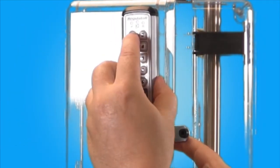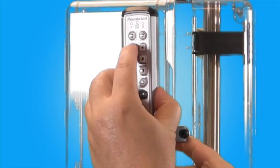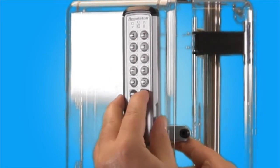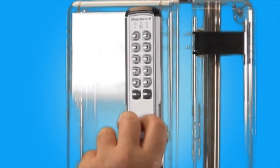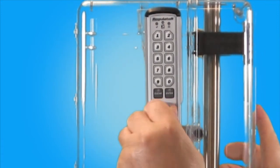Now check the operation of the lock using the factory user or master code and press enter. If the lock is functioning correctly, proceed with changing the codes on the lock.